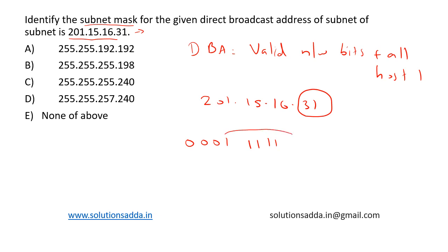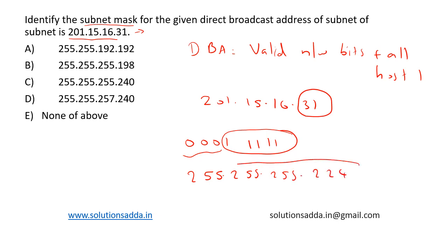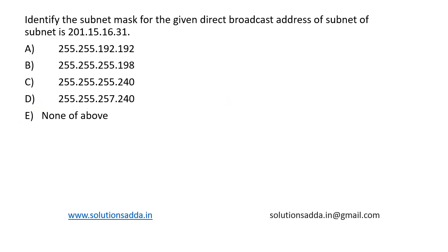Therefore, the subnet mask will be 255.255.255.224. However, this is not present among the options, so option E — none of the above — is the correct answer.